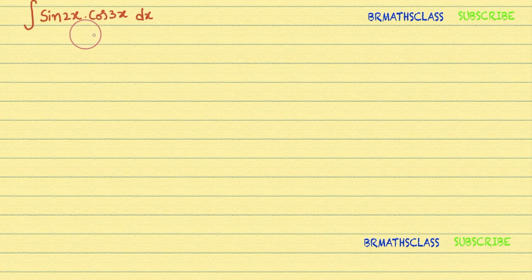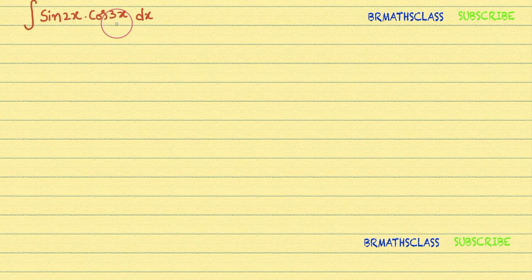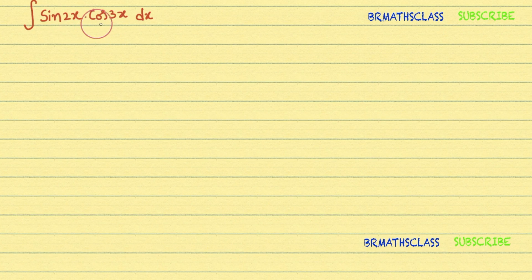We need to find the integral of sin 2x times cos 3x dx. If you observe this problem, there is a product of two trigonometric functions. To integrate this, we will first convert the product of these two trigonometric functions into a sum or difference of two trigonometric functions, and then we can integrate it easily.